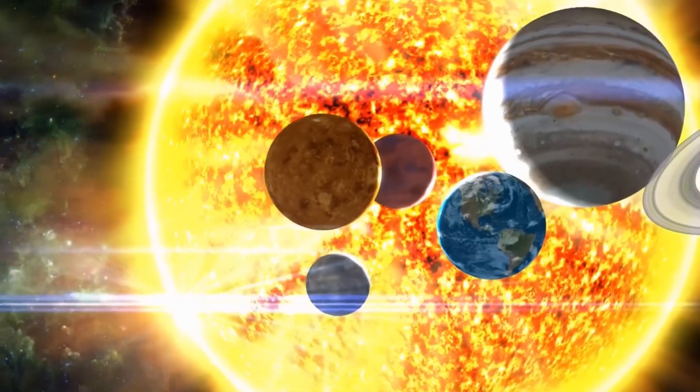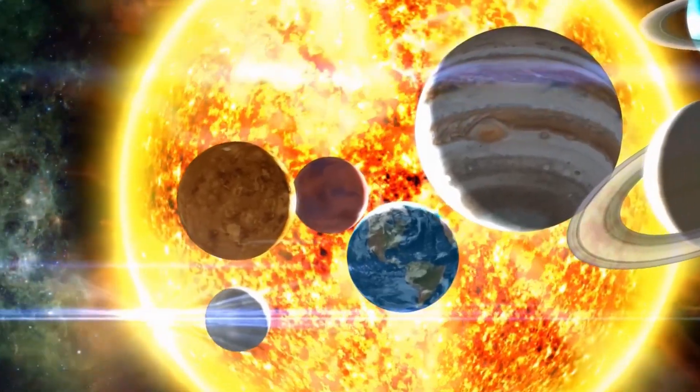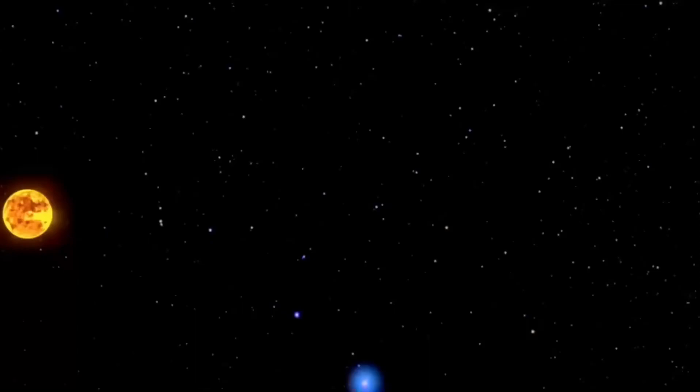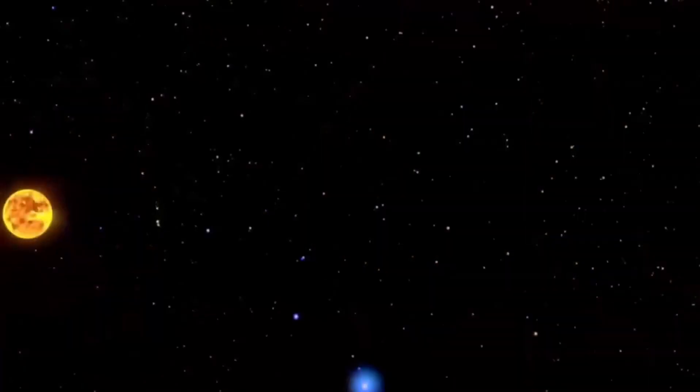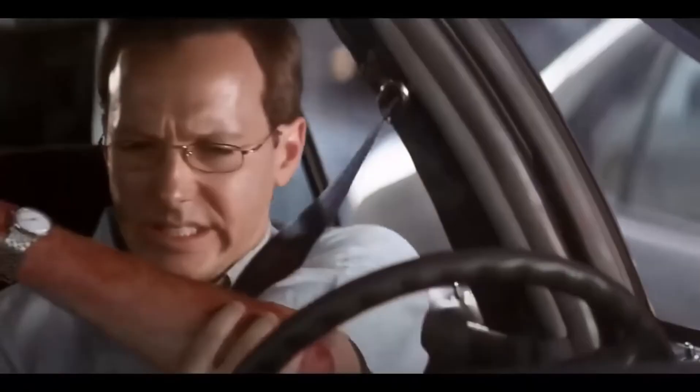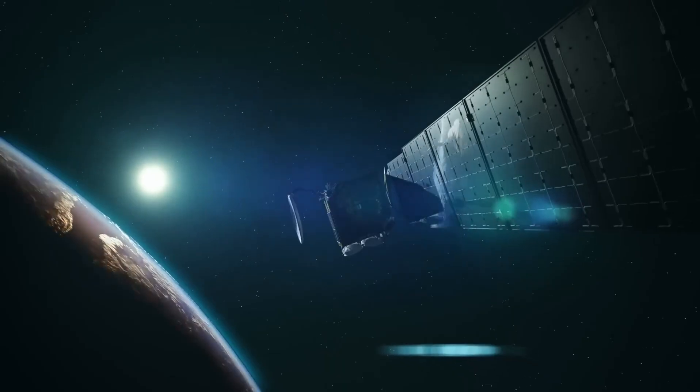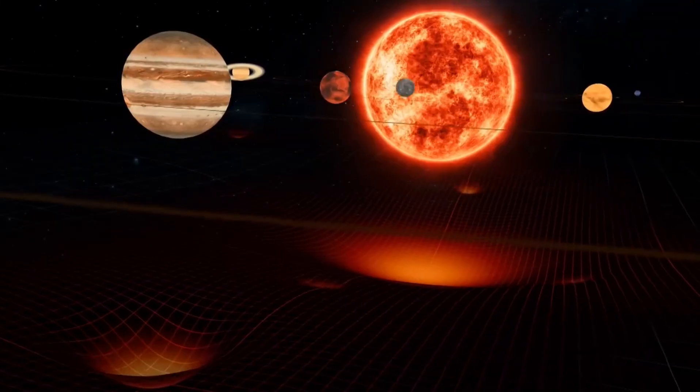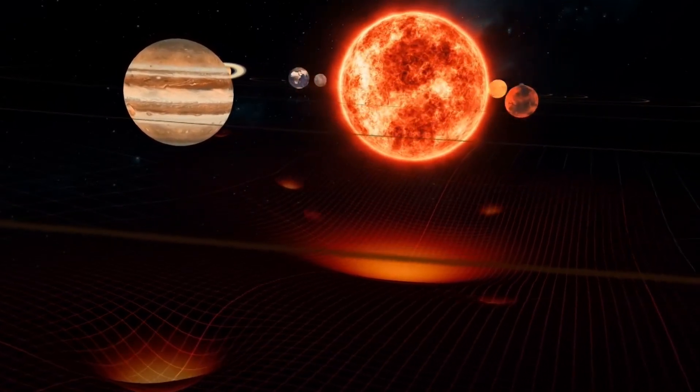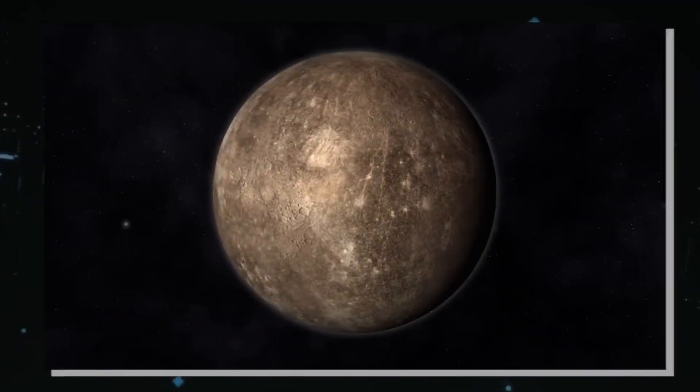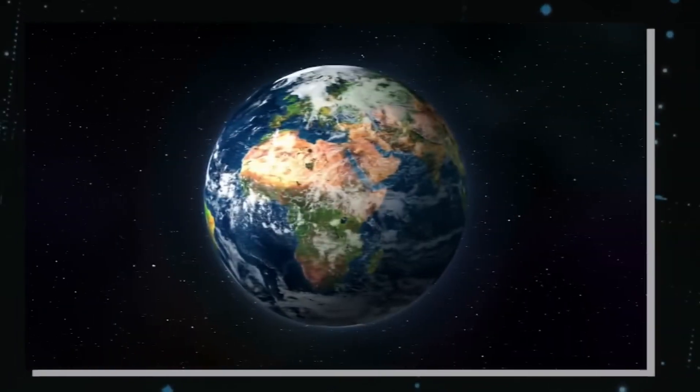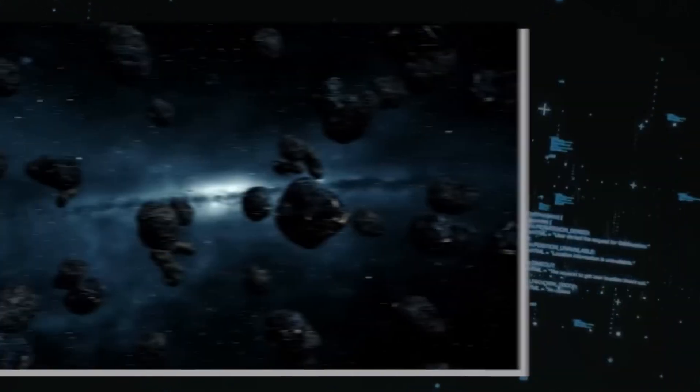Betelgeuse, a behemoth in the cosmic domain, stands as a testament to the universe's capacity to astonish and confound. With a radius more than 700 times that of our sun, it would effortlessly stretch across the space occupied by the asteroid belt and extend its cosmic influence well into the vicinity of Jupiter. This celestial titan commands our attention as its impending transformation promises to be nothing short of breathtaking.